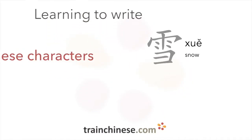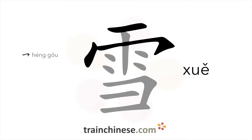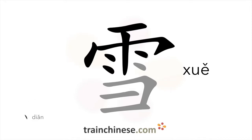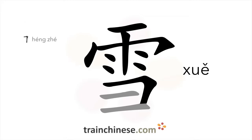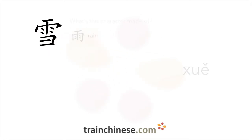Let's take a look at this character. It's written with 11 strokes. Let's look at what goes into this character. This character's got the radical for rain.